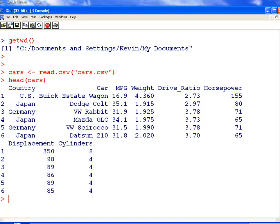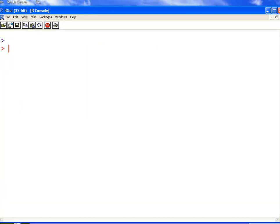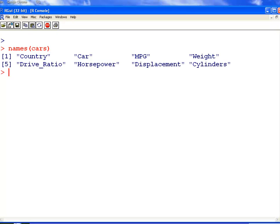It's a read in the CSV file, the head is, there we are, first six cases. The names, which is to say the variables, is country, car, miles per gallon, weight, drive ratio, horsepower, displacement, cylinders.